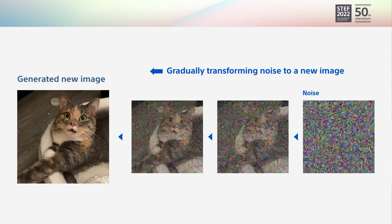One of Sony DGM is based on the so-called diffusion models. We take image generation as an example. The diffusion models are trained to gradually transform noise into a meaningful object. At the end, we will get the new and clean image. Sony has developed a new training strategy for diffusion models, which leads to better performance.